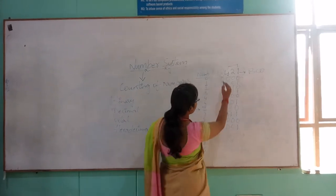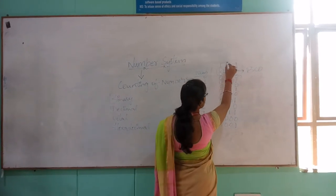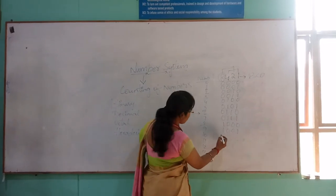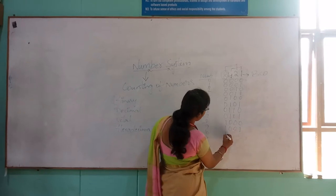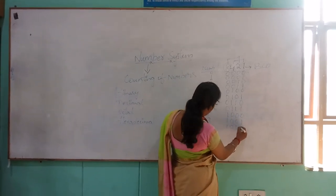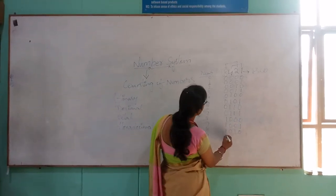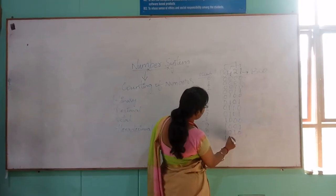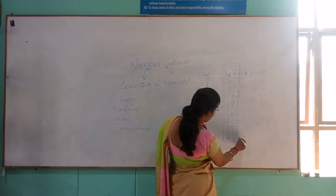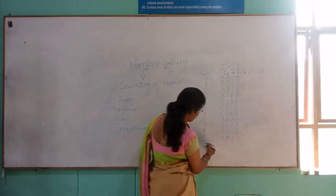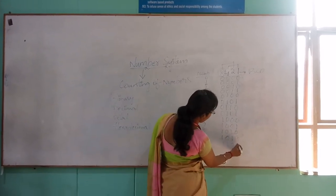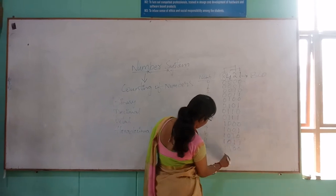For 10, we should add 8 plus 2 to get 10, so: 1, 0, 1, 0. For 11: 1, 0, 1, 1. For 12: 1, 1, 0, 0.